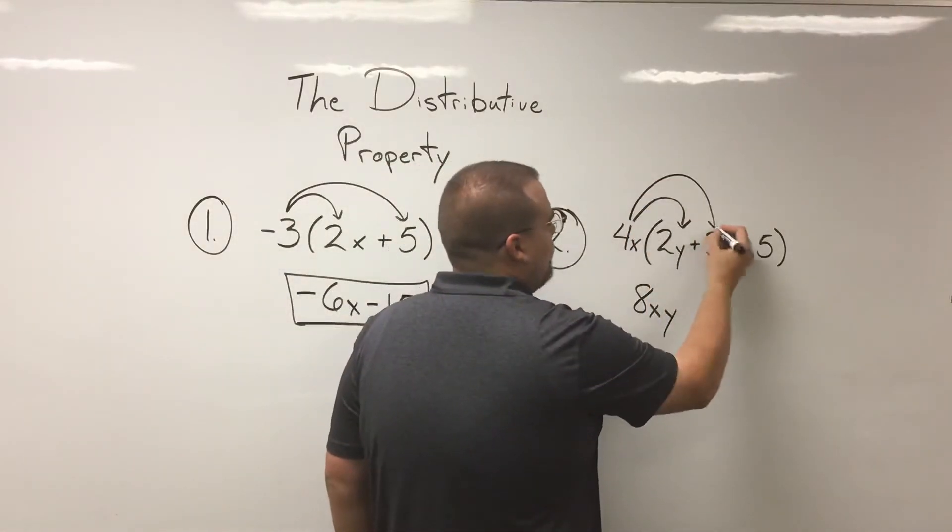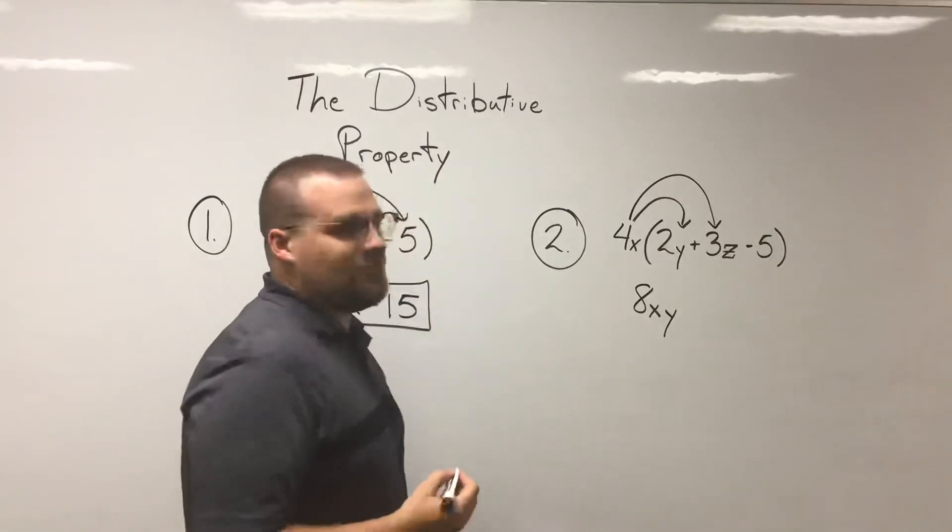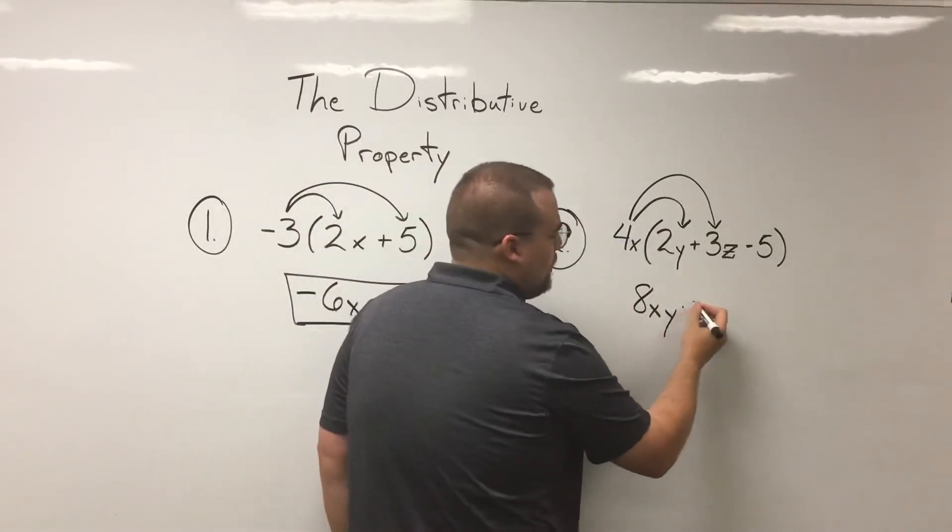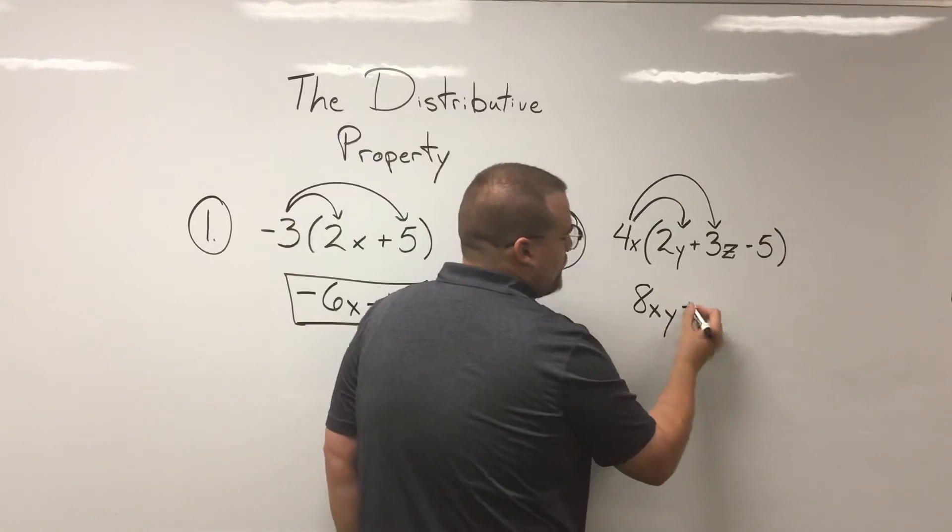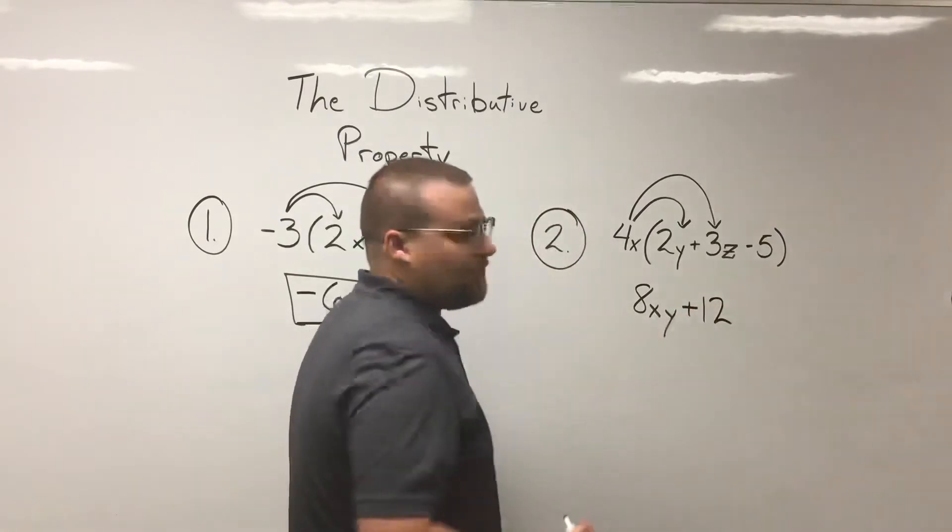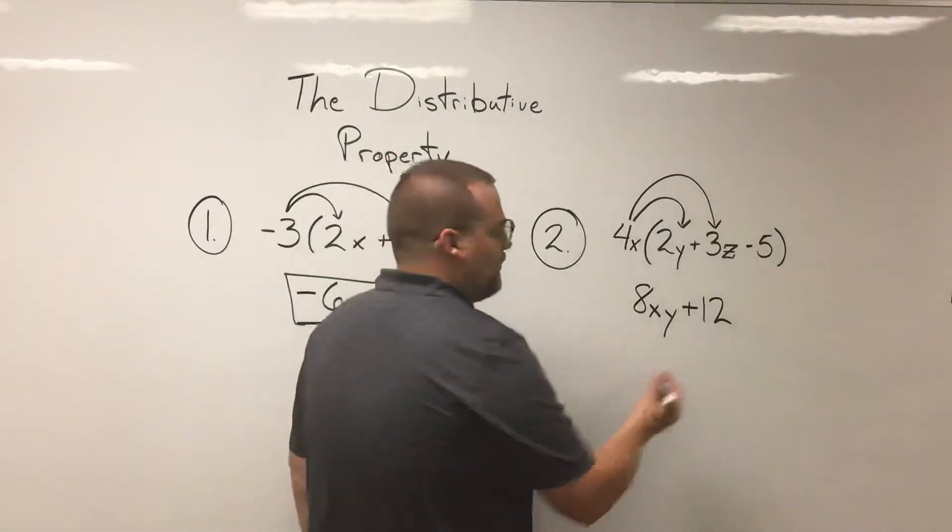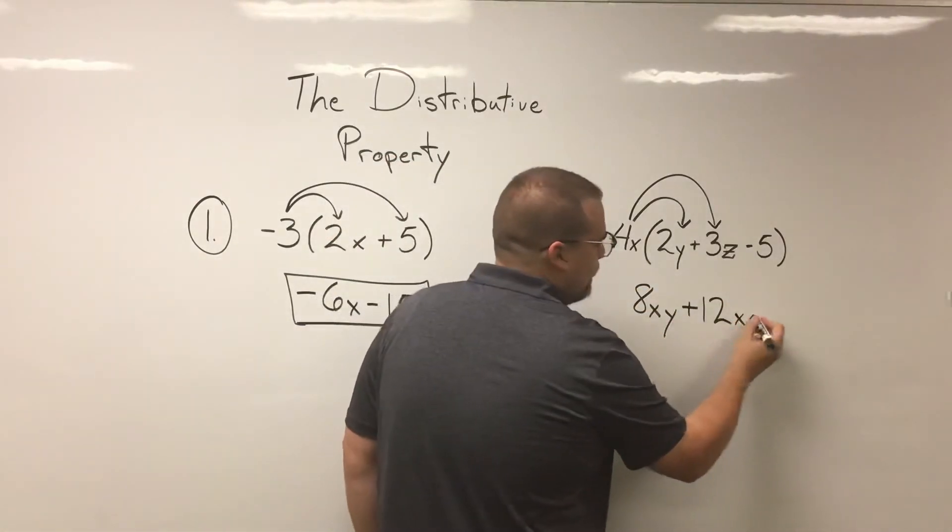Next up the 4x though is going to multiply the 3z. So again the whole numbers four and three are going to multiply making 12. And it is a positive 12. We want to be sure to write that sign. And then x and z are going to multiply making xz.